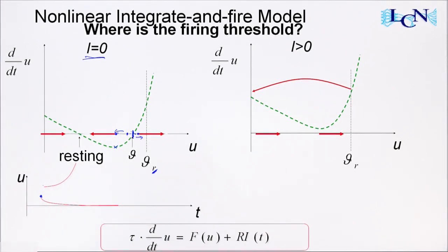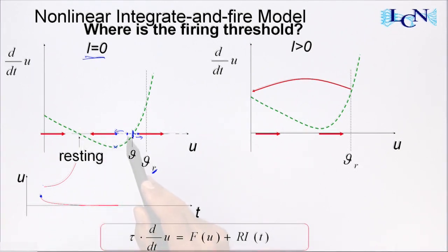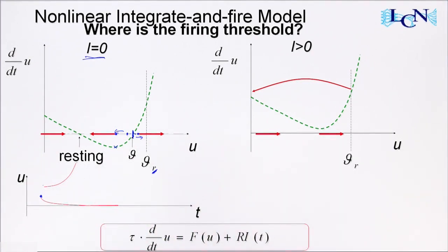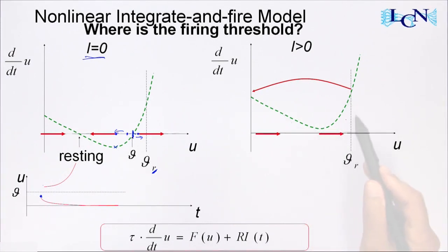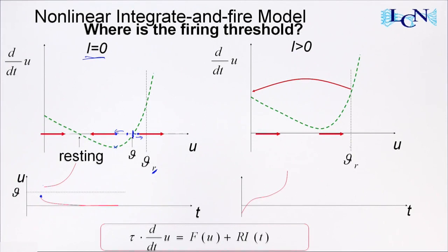Different initial conditions correspond to a short pulse input. As seen in earlier lectures, a pulse input makes a jump of the membrane potential to a new value. If this jump is to a value below theta, the voltage will go back. If the jump is to a value above theta, the voltage will increase further until it is reset numerically. For constant input, if the input is strong enough, the curve is shifted upwards so that there is no crossing point — the flow is always towards the right, and the trajectory moves regularly towards the reset threshold and is then reset.